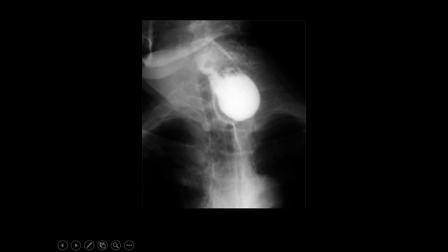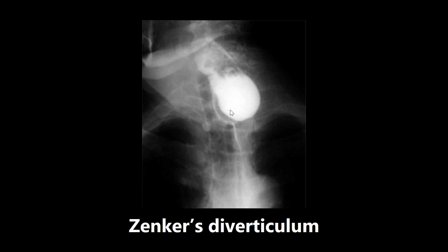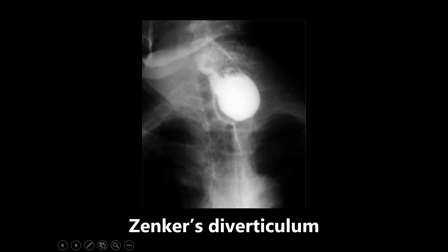This next one is an image of Zenker's diverticulum — an outpouching that occurs in the pharynx, seen on a barium swallow. In the vignette, it's usually a middle-aged man who feels like something is stuck in their throat, doesn't want to eat much, and has really bad breath because food is rotting in this diverticulum. Important to note it is a false diverticulum, as opposed to Meckel's diverticulum, which is a true diverticulum. Zenker's diverticulum is caused by a cricopharyngeal motor dysfunction, which allows this herniation and outpouching to occur.